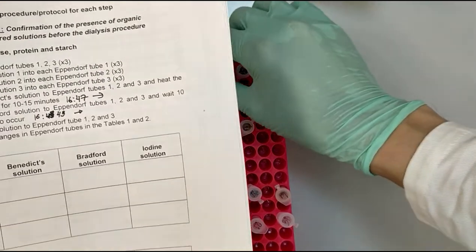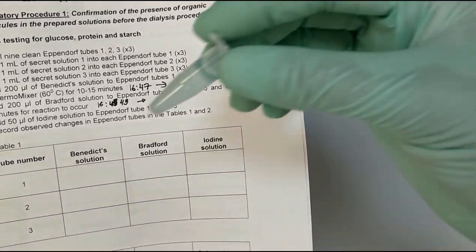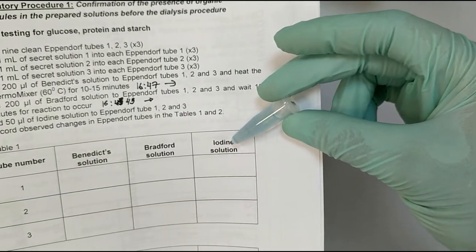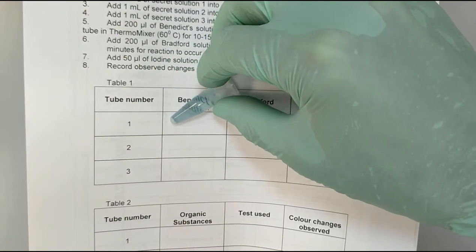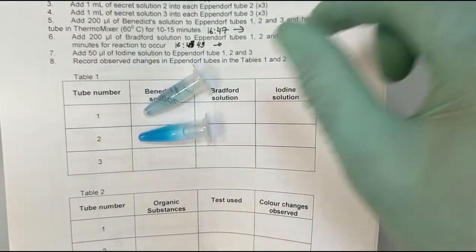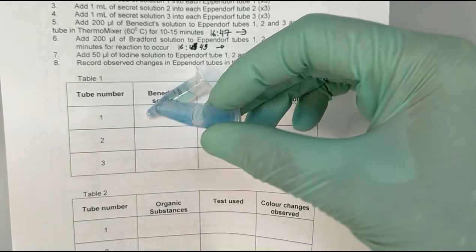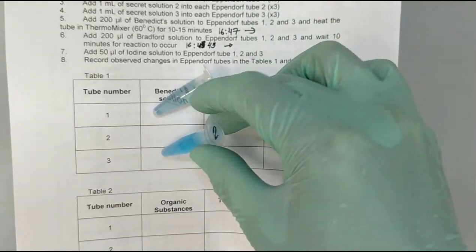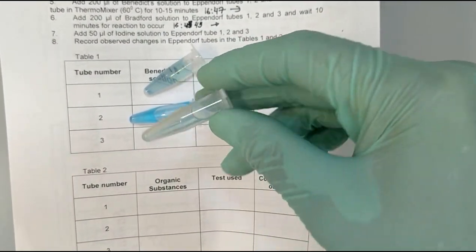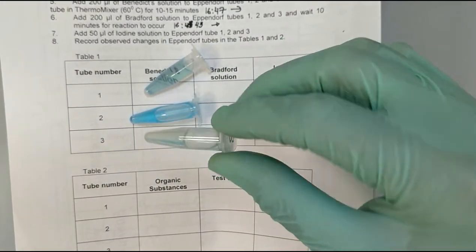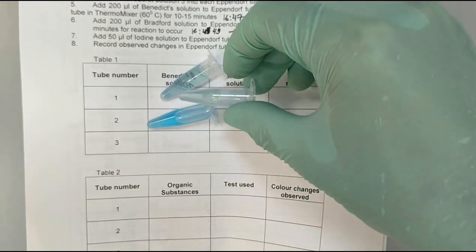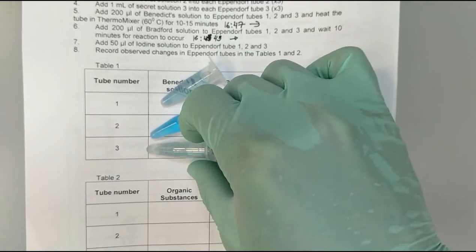Okay, now we can take the Bradford solution and see if there are any changes. So for example, for the first solution, you can see that it is slightly bluish. For the second solution, it is darker blue, and for the last one again, the solution does not have any much difference from the first one.